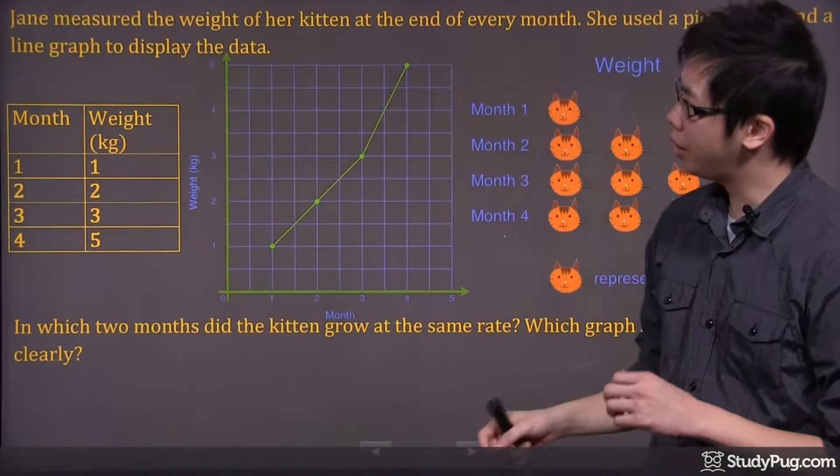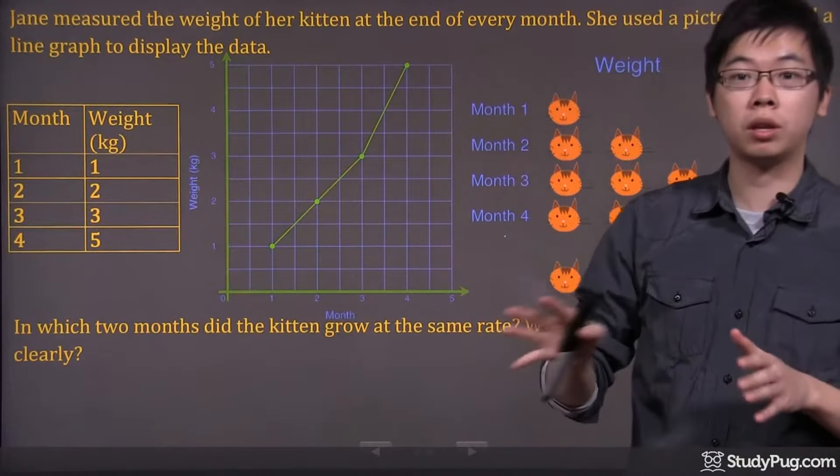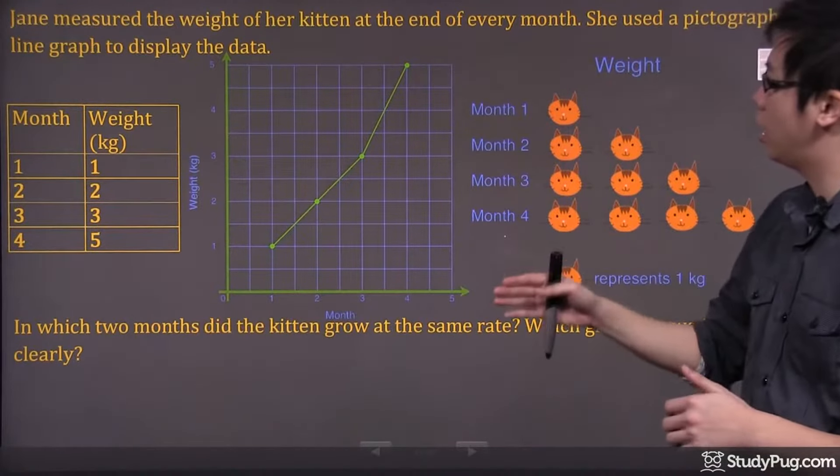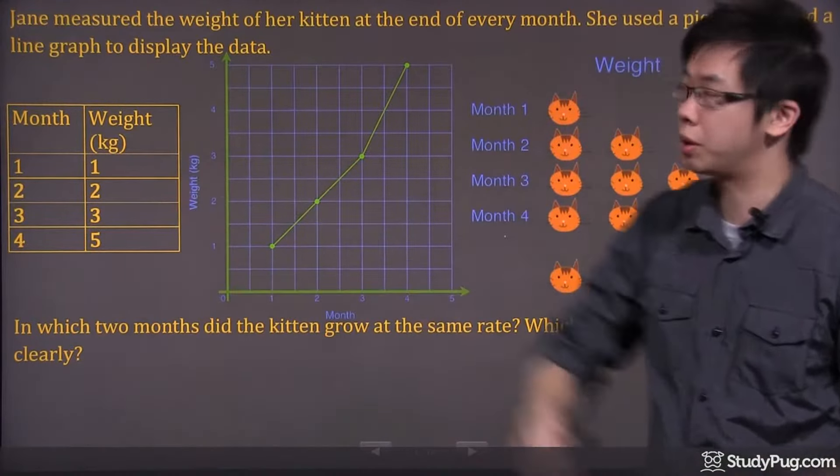Hi, welcome to the question right here. We got two different graphs. What happened is Jane mentioned the weight of her kitten at the end of each month. There's the first month, second month, third month, and the fourth month.